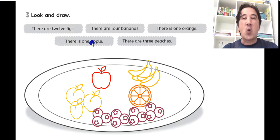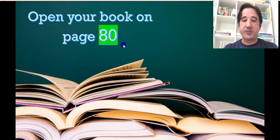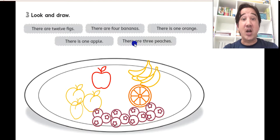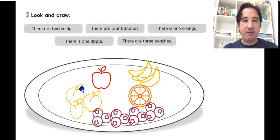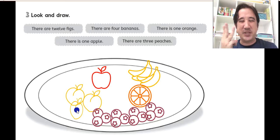There is 1 apple. There is 1 apple. And there are 3. Again. There are 3 peaches. 3 peaches. There are 3 peaches. 1, 2, 3 peaches. There are 2, 3.